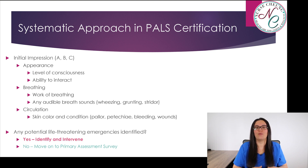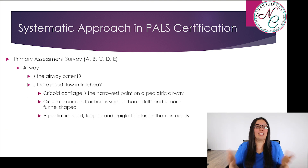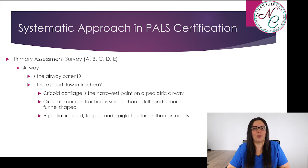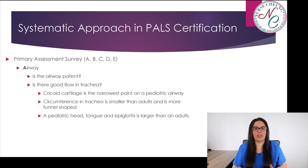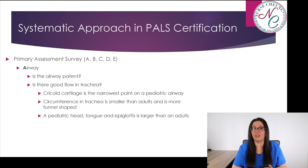If there are any potential life-threatening emergencies identified, we want to identify and intervene. However, if there are none, we're going to move on to the primary assessment survey. An easy way to remember your primary assessment survey is ABCDE. A stands for airway — is the airway patent? Is there good flow in the trachea? The cricoid cartilage is the narrowest point in a pediatric airway. The circumference of the trachea is smaller than in adults and is more like a funnel. A pediatric patient's head, tongue, and epiglottis are much larger than in adults and can cause a lot more obstruction.